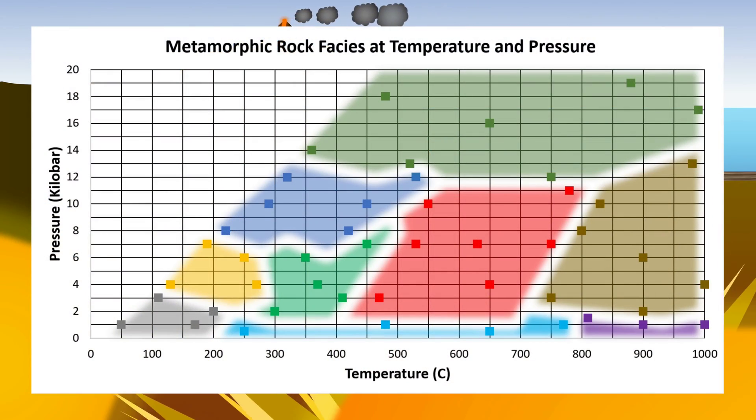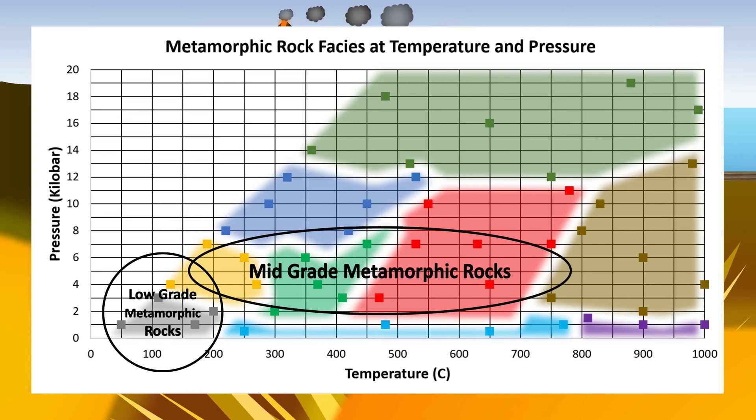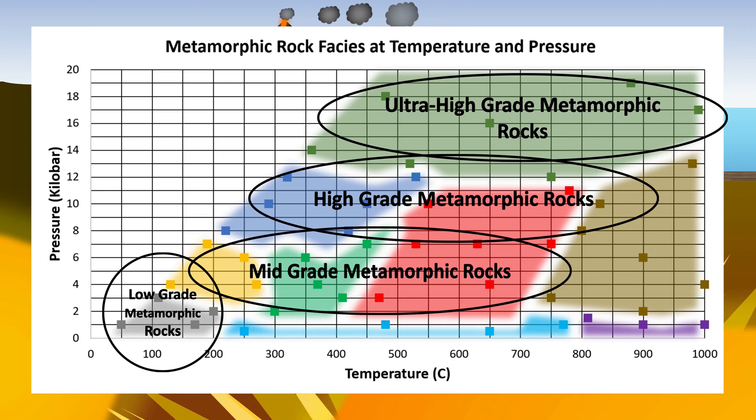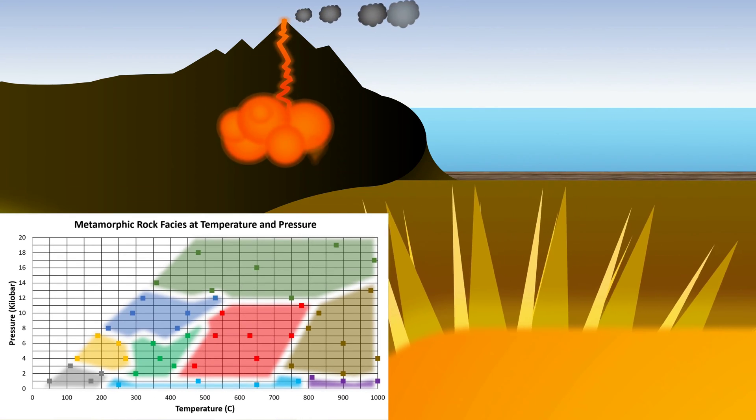We can illustrate these conditions on a graph, with temperature on the x-axis and pressure on the y-axis. By the way, this graph is sometimes shown upside down. These conditions, where the temperature and pressure are relatively low, would give us low-grade metamorphic rocks. As we move up the graph and to the right, we get mid-grade, and finally high-grade and ultra-high-grade metamorphism. Let's find examples of these different grades of metamorphism.